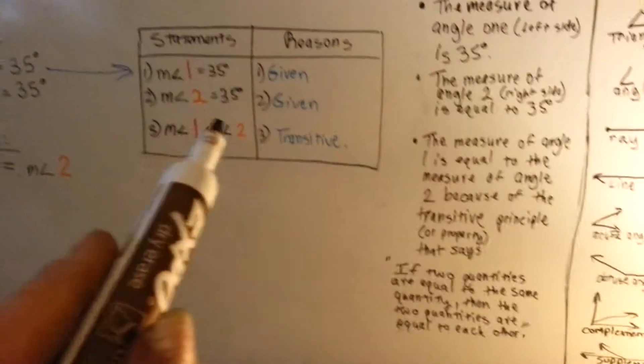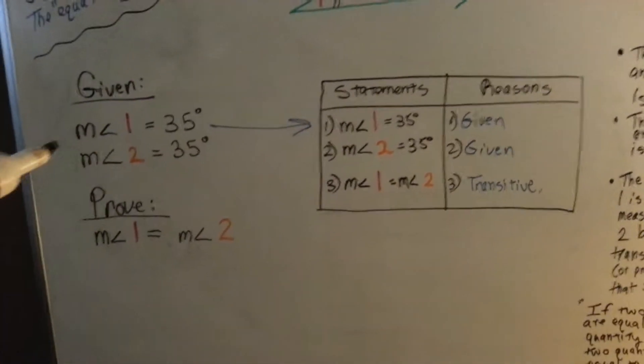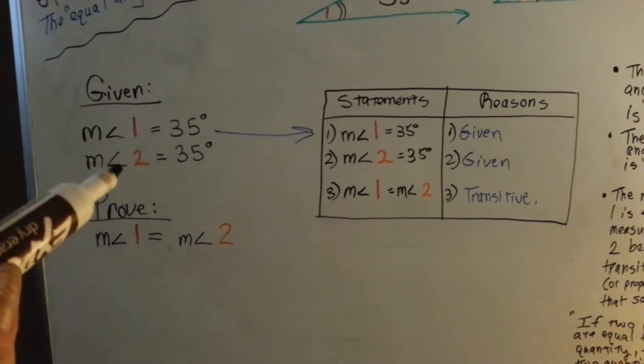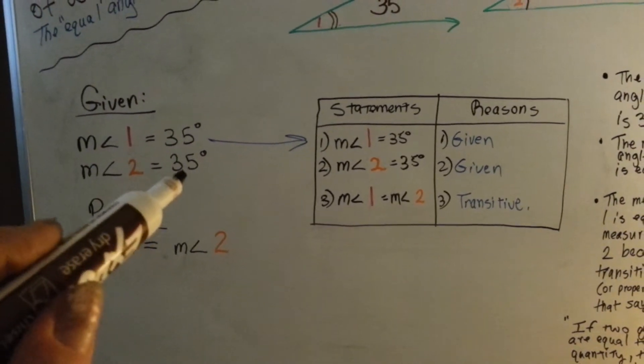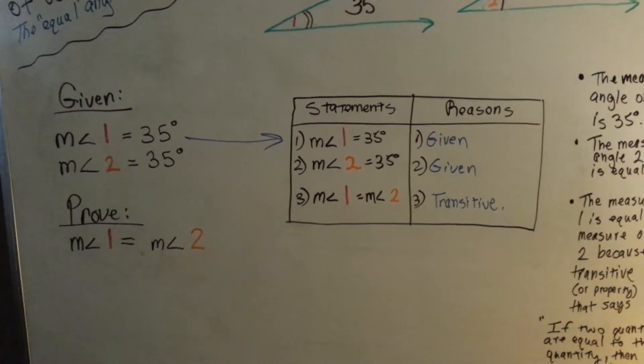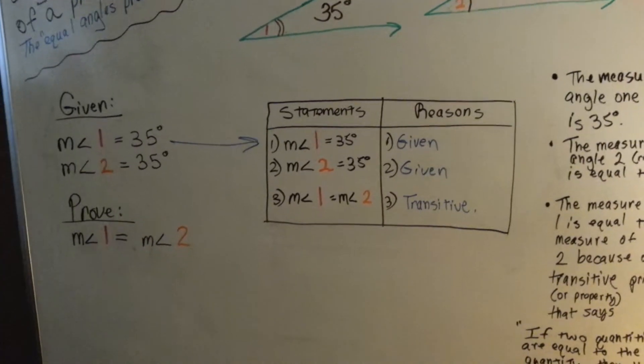So, that's our proof. We can say we proved that this is true. If we said that the measure of Angle 1 is equal to the measure of 35 and the measure of Angle 2 is equal to the measure of 35, and our reason was given, then we'd have to say that was inductive reasoning and not deductive reasoning. Silly as it sounds.